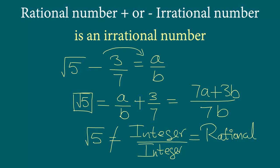You can assume that square root 5 is an irrational number in this example, and in the previous example that square root 3 is an irrational number. So here square root 5 is shown to be rational, but we know square root 5 is irrational, and hence our assumption is wrong.